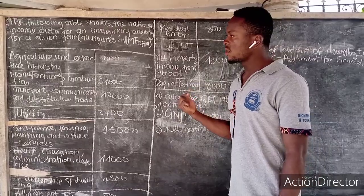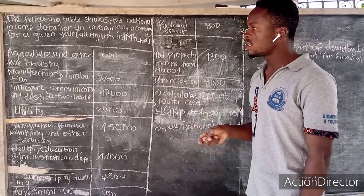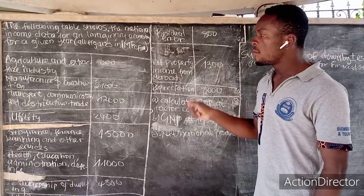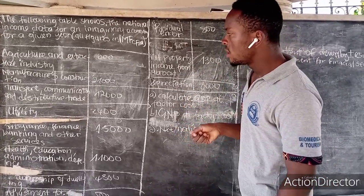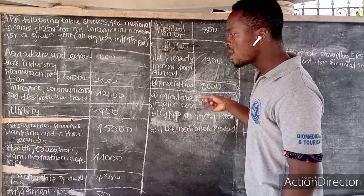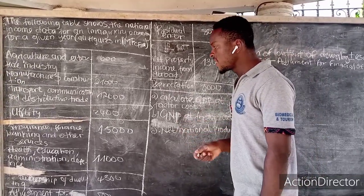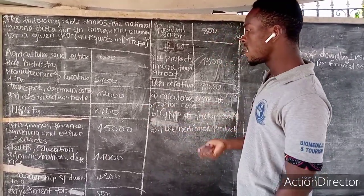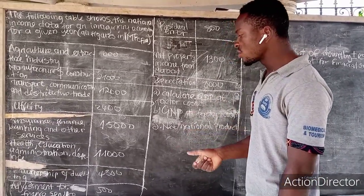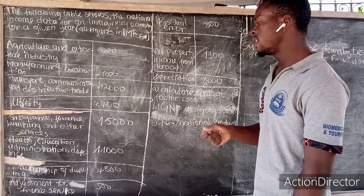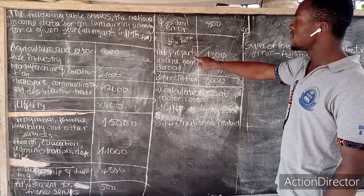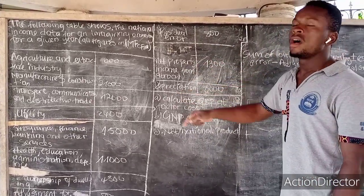They give us in the table: agriculture and extraction industries; manufacturing and construction; transport, communication, and utility; insurance, finance, banking, and other services; health, education, and administrative; ownership of dwellings; adjustment for financial savings; residual errors; net property income from abroad; and depreciation.